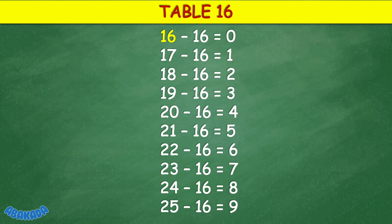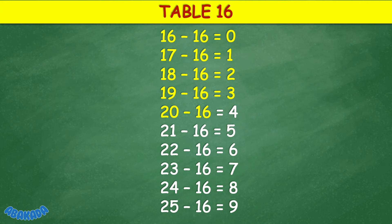Table 16: 16 minus 16 equals 0, 18 minus 16 equals 2, 19 minus 16 equals 3, 20 minus 16 equals 4, 21 minus 16 equals 5, 22 minus 16 equals 6, 23 minus 16 equals 7, 24 minus 16 equals 8.